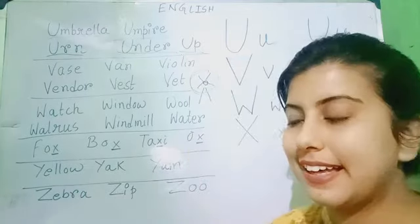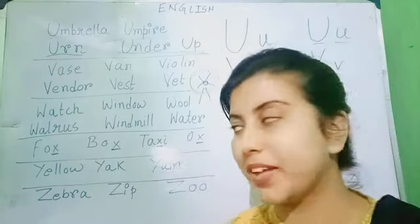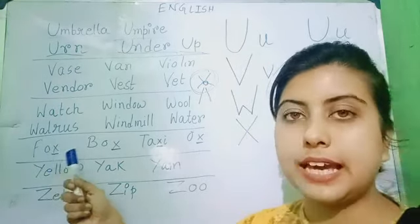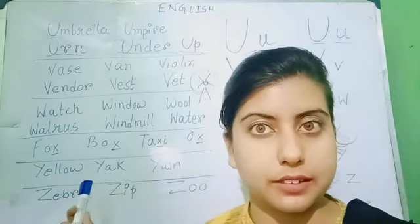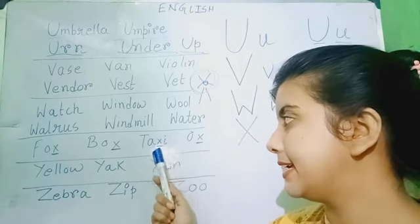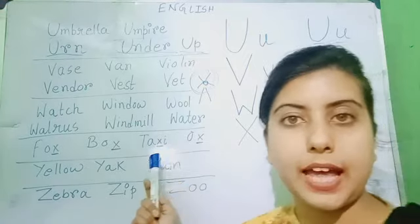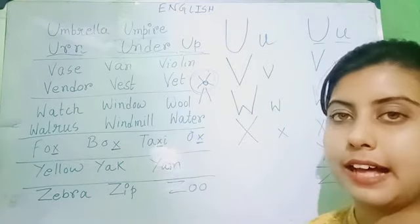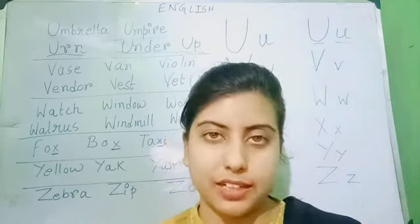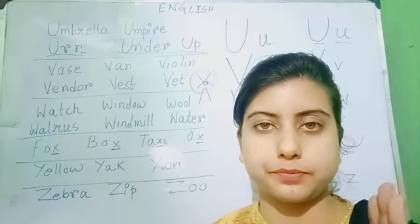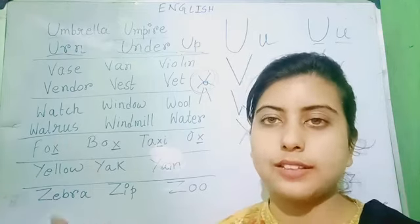Let us see the words that we have in our book. Fox. F-O-X. Fox. Here, X is used in the end. Box. B-O-X. Box. Here also, X is used in the end. Next, we have taxi. T-A-X-I. Taxi. Here, X is used in the middle. And lastly, we have ox. O-X. Ox. And here, X is used in the end. But there are words which start with X, like Xerox, Xylophone — but in your book, these were the words.